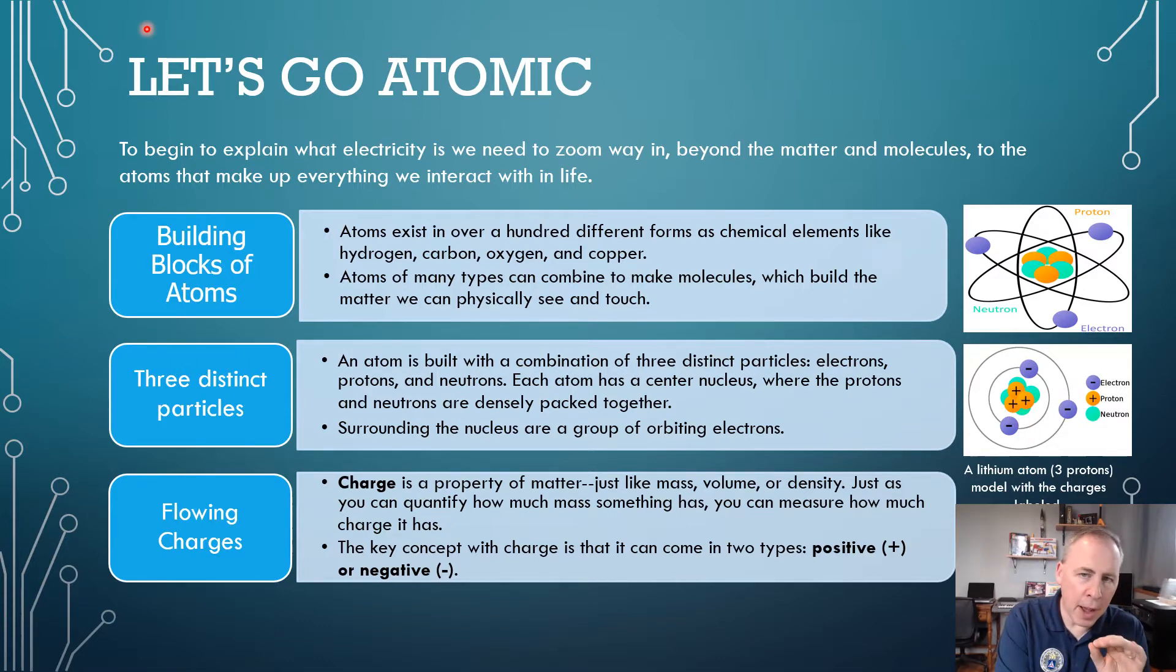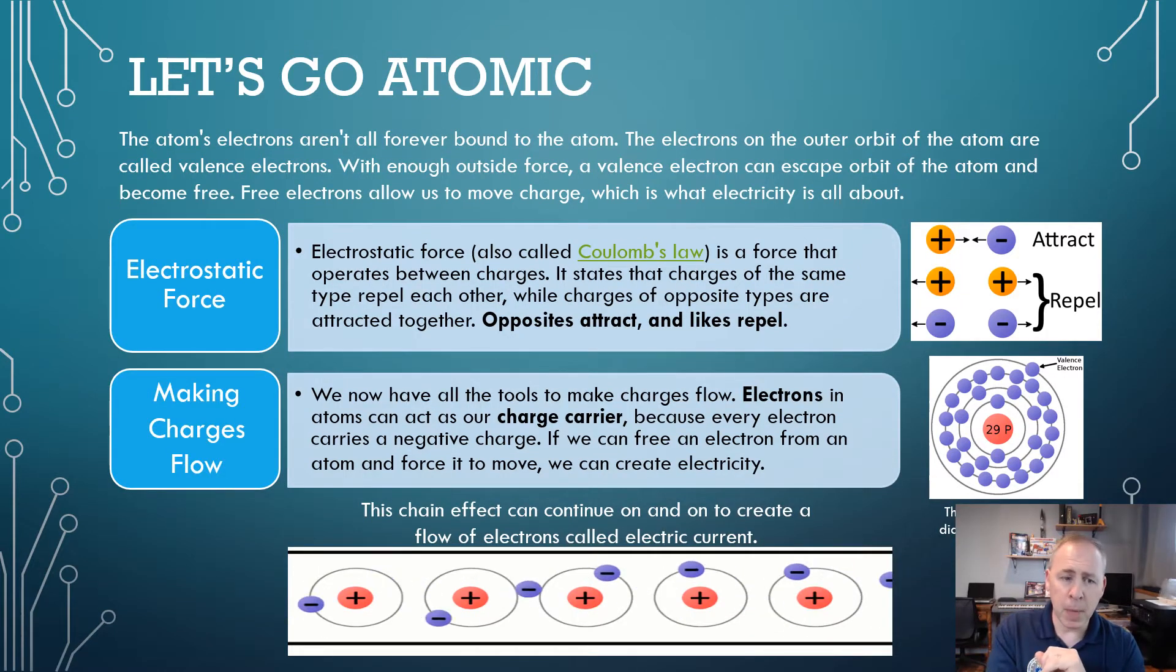So charge is a property of matter. Just like mass, volume, and density, just as you can quantify how much mass or weight something has, you can measure how much charge it has. The key concept with charge is that it comes in two types. It comes in positive and negative. So let's go atomic for a moment. The atom's electrons aren't all forever bound to the atom. The electrons on the outer orbit or the outer shell of the atom are called valence electrons. With enough outside force, a valence electron can escape the orbit or the shell of that atom and become free. Free electrons allow us to move a charge, which is essentially what electricity is all about.